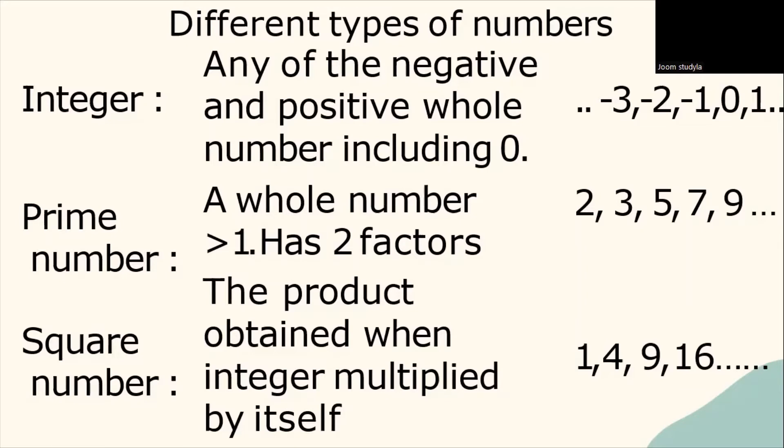And what is a prime number? Prime number is a whole number greater than 1 and has 2 factors. Example: 2, 3, 5, 7, 9, 11 and so on.